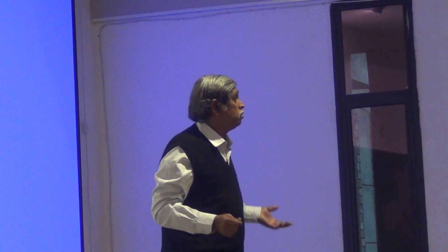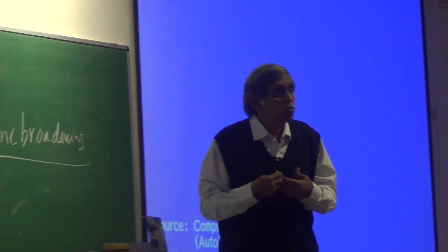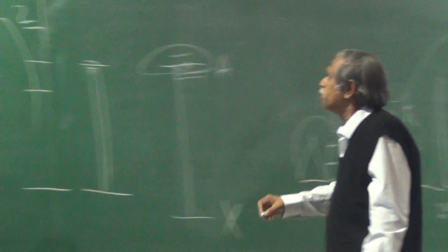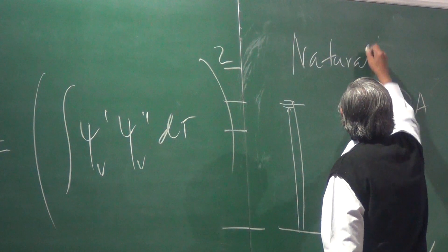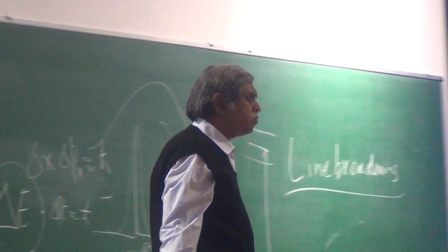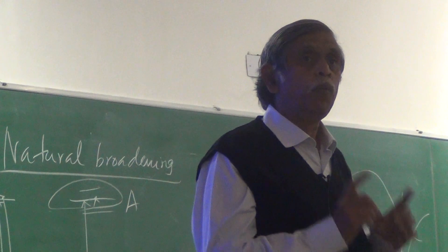Very fast decay means huge uncertainty in the energy and therefore a broad width of the spectrum. A very long decay time means the uncertainty in the energy is quite small, and you get much sharper lines. And that is basically one of the reasons why a line is broad. This sort of broadening is what we call natural broadening. It is called lifetime broadening. It is called Heisenberg broadening. It is called transform-limited broadening. There are many names to it, but all of them simply mean that there is a certain broadening because of the finite lifetime, which causes an uncertainty in the energy of the state and therefore a width in the transition frequency.